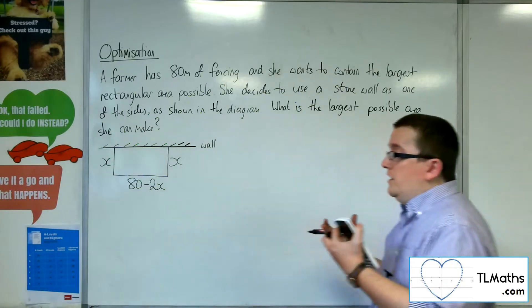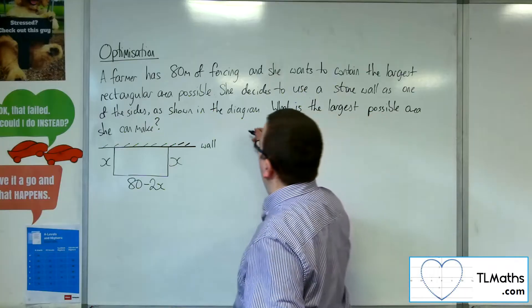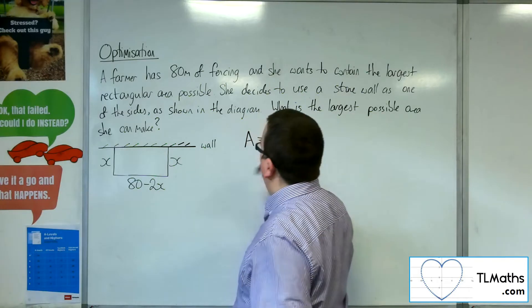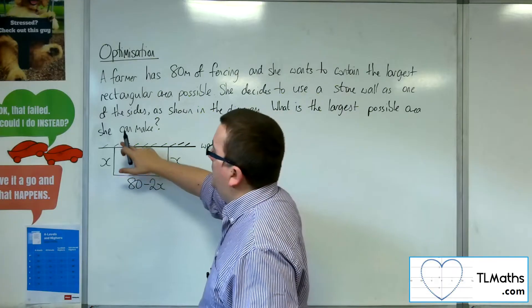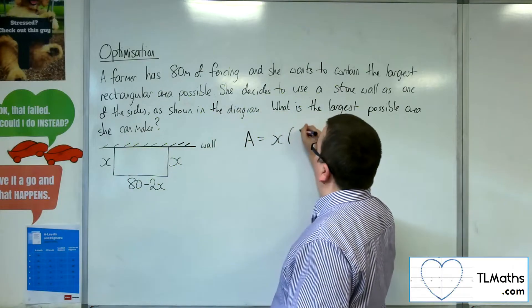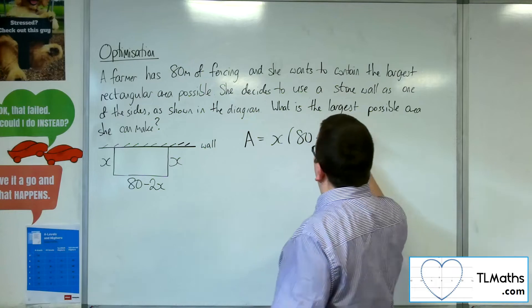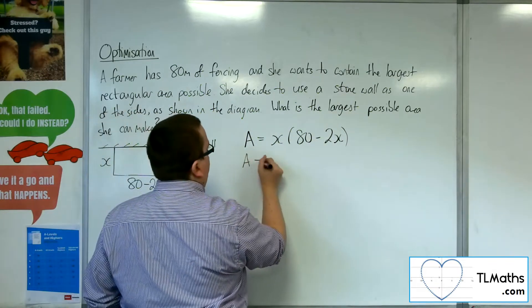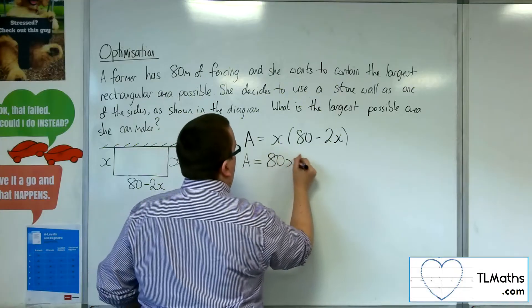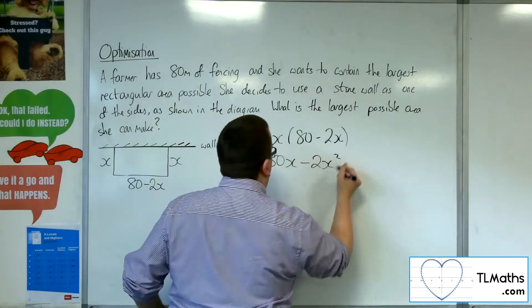Then what we can do is write down what the area is equal to, because the area is just going to be the height times the width. So x times 80 minus 2x. We can multiply that out and we get 80x take away 2x squared.